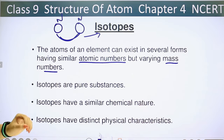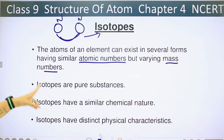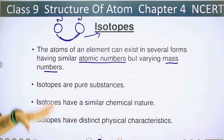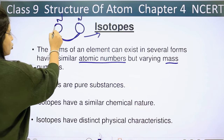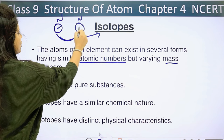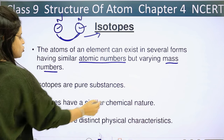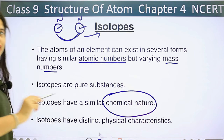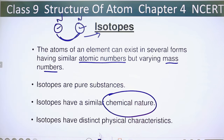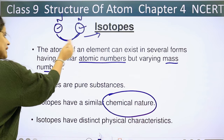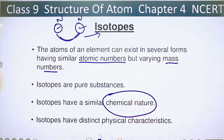Isotopes are pure substances. Isotopes have a similar chemical nature. And isotopes have distinct physical characteristics — their physical characteristics can be different.